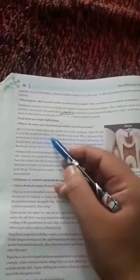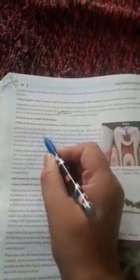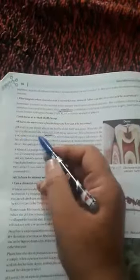When the pH level in the mouth falls below 5.5, tooth decay can occur because of the production of acid by bacteria metabolizing sugary substances.